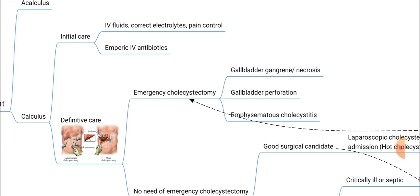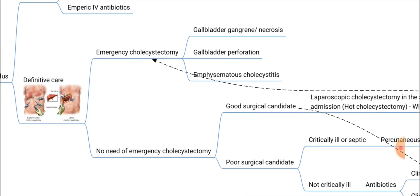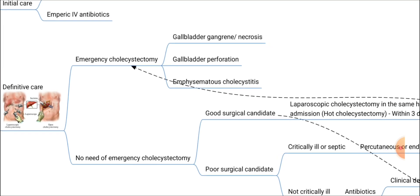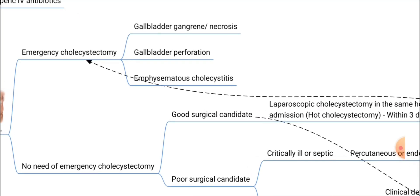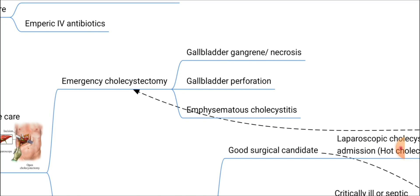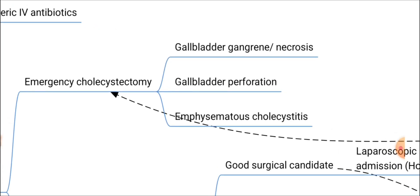If the patient is unstable, appropriate initial resuscitation should be done. After initial care, move to definitive care. In the acute presentation, there are indications for emergency cholecystectomy: if the patient has gallbladder gangrene, necrosis, gallbladder perforation, or emphysematous cholecystitis — these are indications for emergency cholecystectomy.